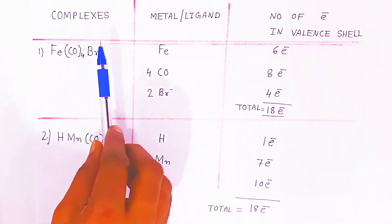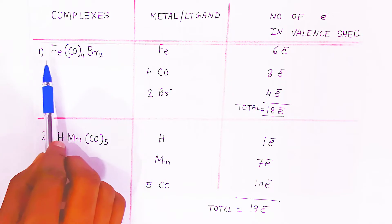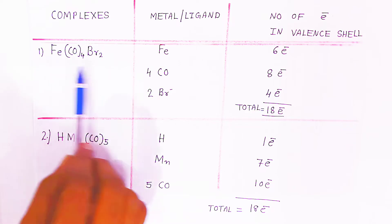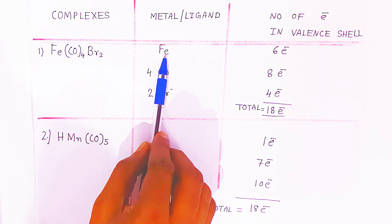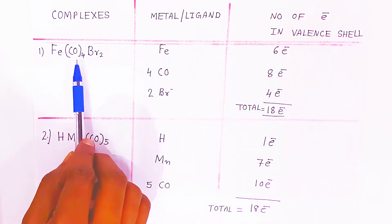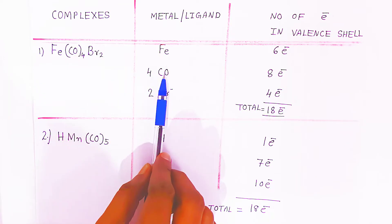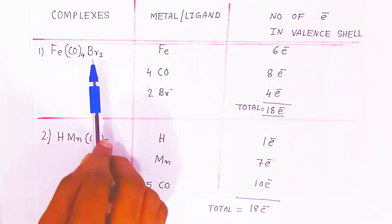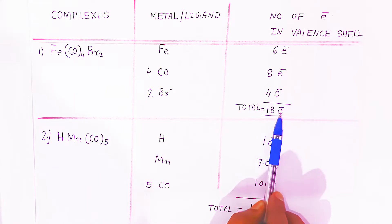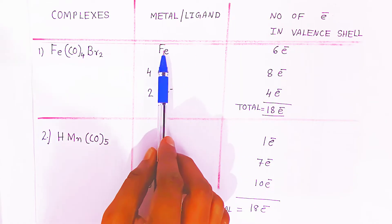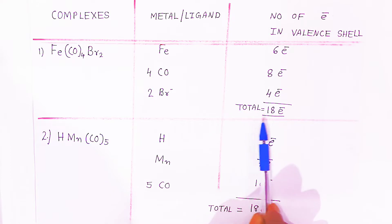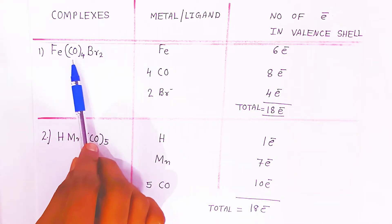In the first example, the metal is iron (Fe), which has 6 electrons in its valence shell. There are 4 carbonyl ligands, which donate 2 electrons each, giving a total of 8 electrons. Bromide donates 2 electrons each, giving 4 electrons total. When you add all these electrons — 6 + 8 + 4 — the total is 18 electrons. That means this complex is stable.